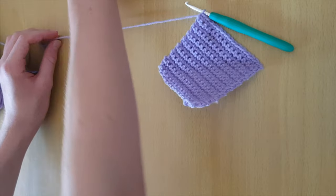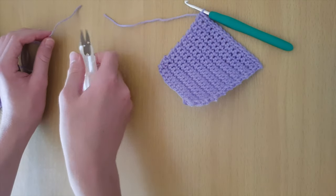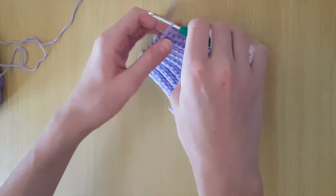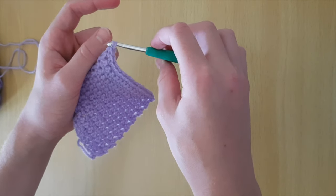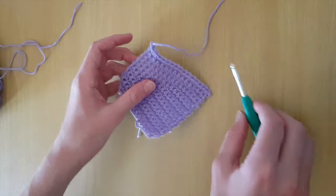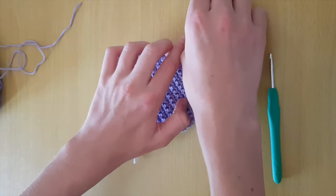I am now ready to snip my yarn. Make sure you leave enough so then you can weave in your end. Then wrap the yarn around and pull through. This will make a finishing knot so then your work does not come undone. But to make sure, we will also weave in the end.